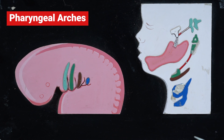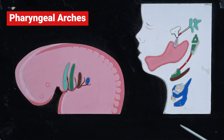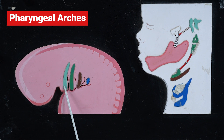In the same model, the examiner can ask you about the muscles derived. The first arch gives rise to all the muscles of mastication, the anterior belly of digastric, the mylohyoid muscle, tensor tympani, and tensor veli palatini. All these muscles develop from the first pharyngeal arch and hence are supplied by the mandibular nerve.